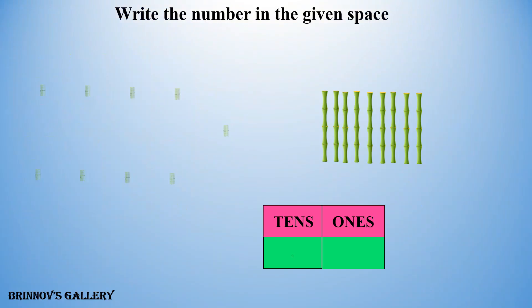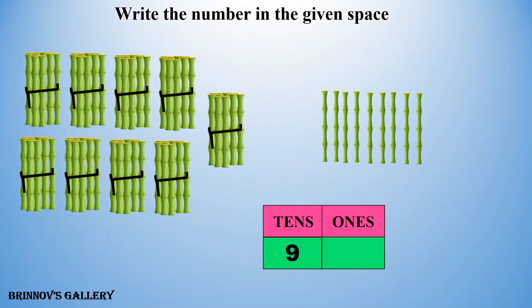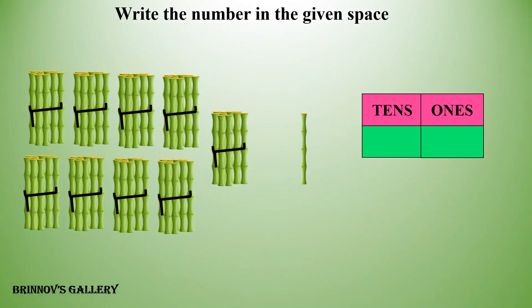Nine tens, nine ones — the number is 99. Nine tens, one one — the number is 91.